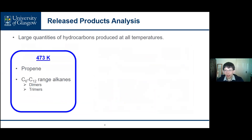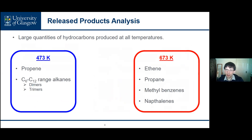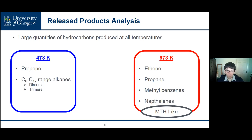At the highest reaction temperature the product slate is very different, with liquid products consisting mainly of benzene, toluene, xylenes and naphthalenes, together with light olefins in the non-condensable products. There is also a significant level of propane production, which is distinct from the propene. Overall, this product slate is quite similar to that produced by methanol to hydrocarbons reactions over ZSM-5, with the exception of this propane production.